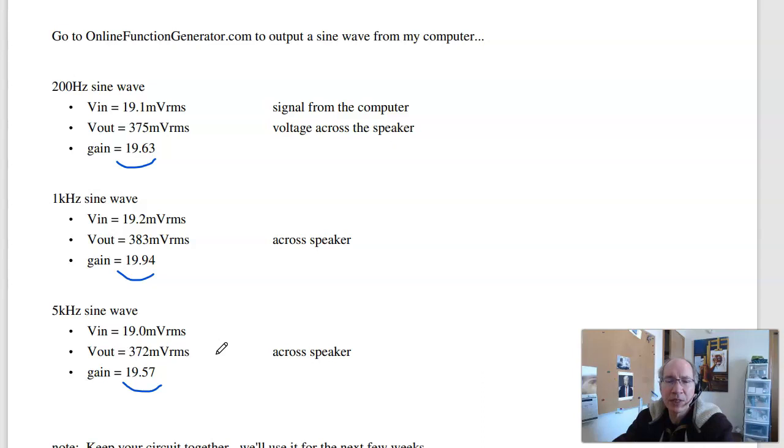So that is working. I've got an amplifier with a gain of 19. Yeah, basically 20. Good between 200 and 5 kilohertz. Probably beyond that, but that's all I measured.